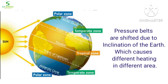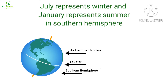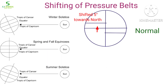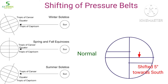This inclination causes differences in heating of the continents, oceans, and pressure conditions in January and July. January represents winter and July represents summer in the northern hemisphere, but it is the opposite in the southern hemisphere. When the sun is overhead on the Tropic of Cancer, pressure belts shift 5 degrees towards north, and when the sun is overhead on the Tropic of Capricorn, pressure belts shift 5 degrees towards south. This shifting mostly occurs between 30 and 40 degrees in both hemispheres.